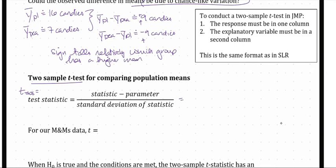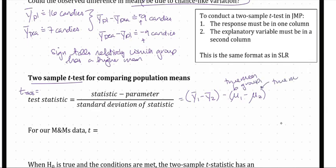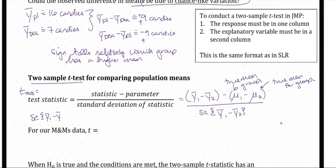This works out to be the observed difference of means, Ȳ₁-bar and Ȳ₂-bar, minus the hypothesized difference of the true means for those groups — μ₁ for group 1 and μ₂ for group 2. The order of the subtraction matters. In the denominator, we have the standard deviation of our sample difference — the standard error of Ȳ₁-bar minus Ȳ₂-bar. This standard error exists in a nice, neat form and has some familiar properties.